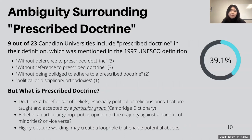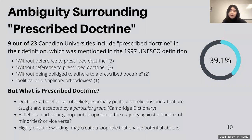The first point we found was about the ambiguity surrounding the term 'prescribed doctrine.' This term comes from the UNESCO definition, which defines academic freedom as a right without constriction by prescribed doctrine. Our research found that 9 out of 23 Canadian universities include this specific term in their definition.